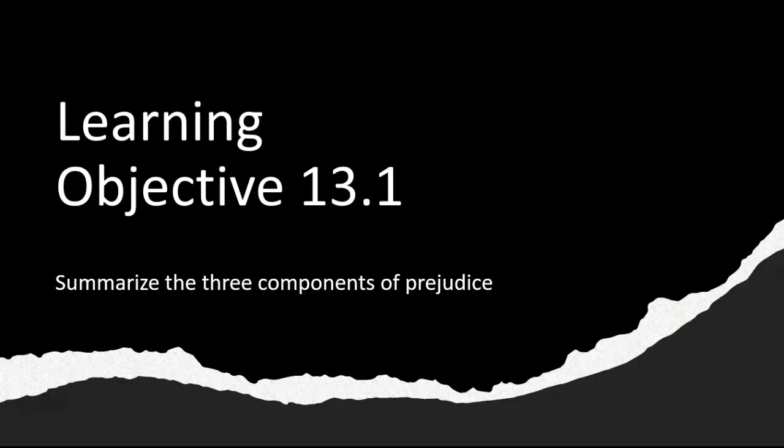This video will cover the second part of Learning Objective 13.1, where we're talking about the components of prejudice for our social psychology PSY 235. We've already talked about the cognitive component. Now we need to talk about the affective component, which refers to the way in which our attitudes make us feel.